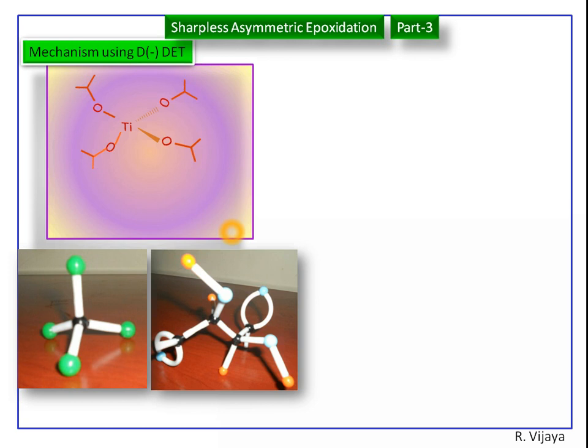We are seeing the molecule from the backside. Here the two isopropoxide groups are removed by minus DET. We get a new complex.